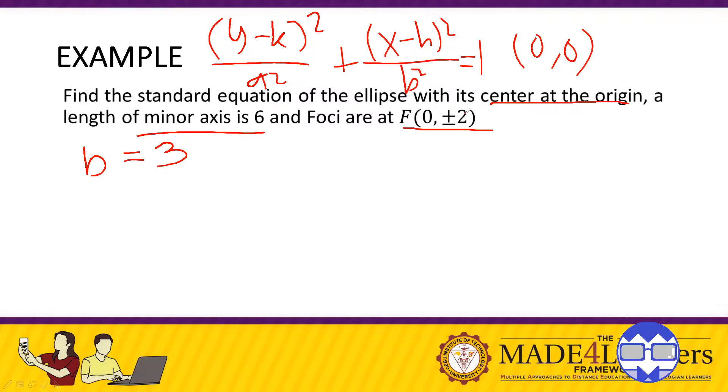Okay, so obviously C is 2. Okay, so we're missing A. So for the missing A, we simply use the formula again. So C equals square root of A squared minus B squared.